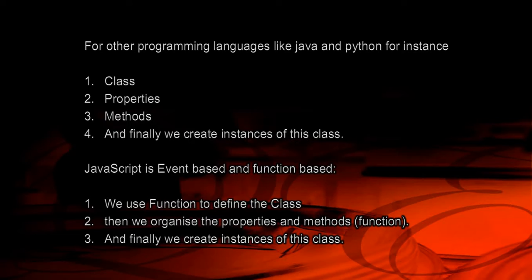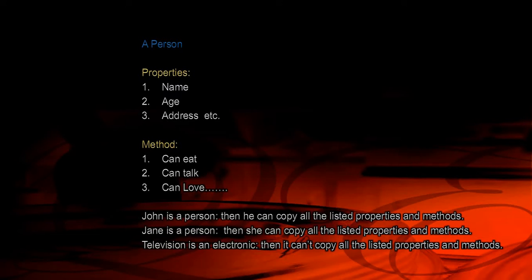In JavaScript, we use a normal function to define the class, organize properties and methods inside that function, and then create instances of the class. For example, let's say we want to make an object for a person. This object will contain the data and behavior of a person. A person will have properties like name, age, and address, and behaviors like eating, talking, and the ability to love.